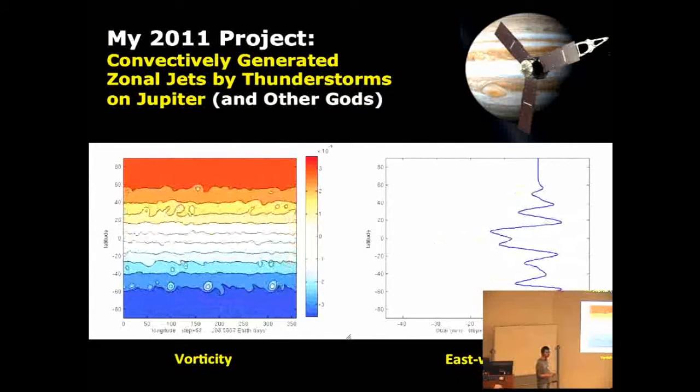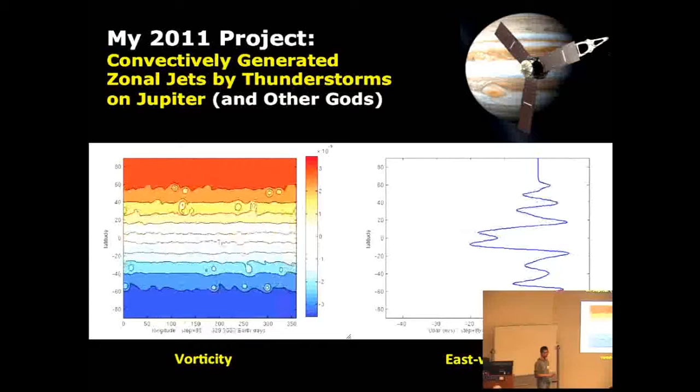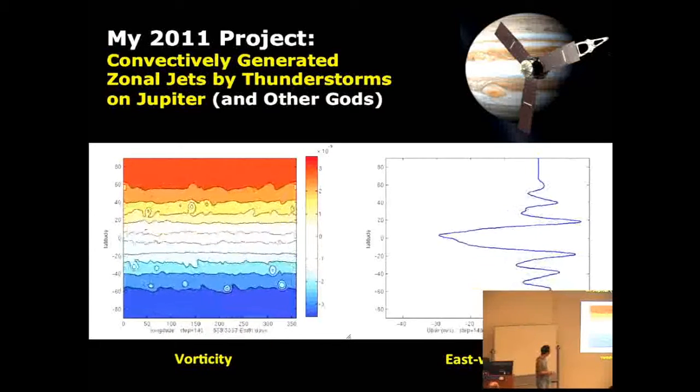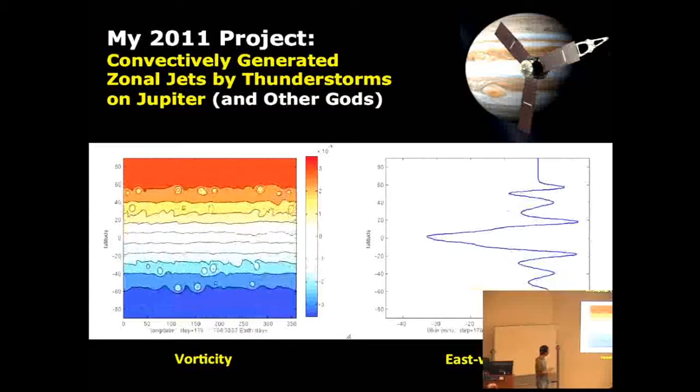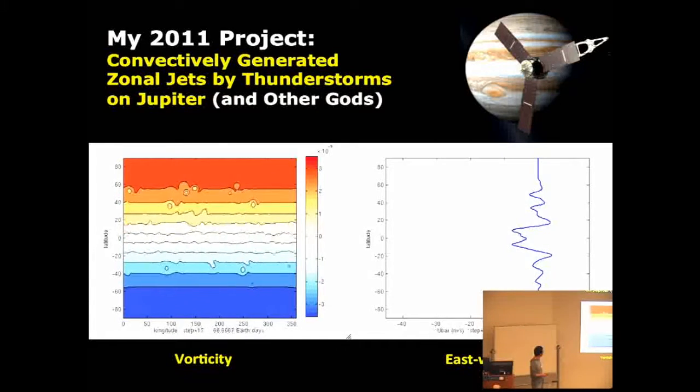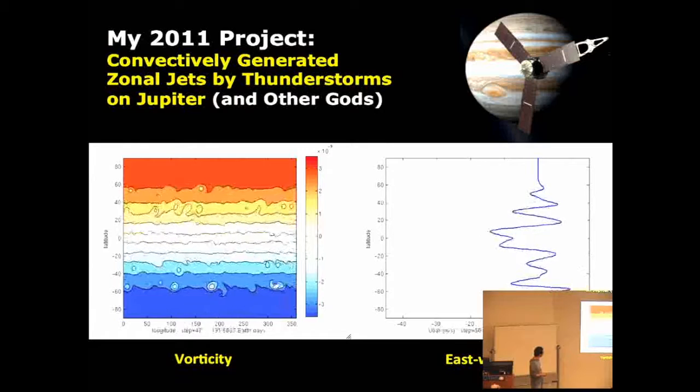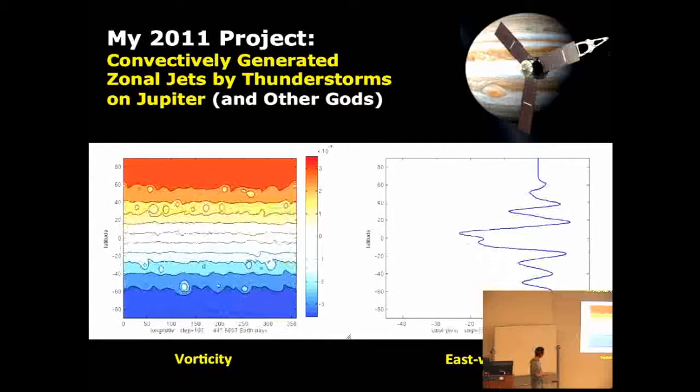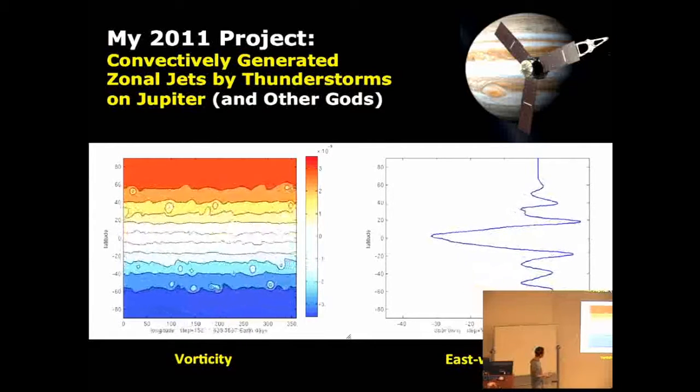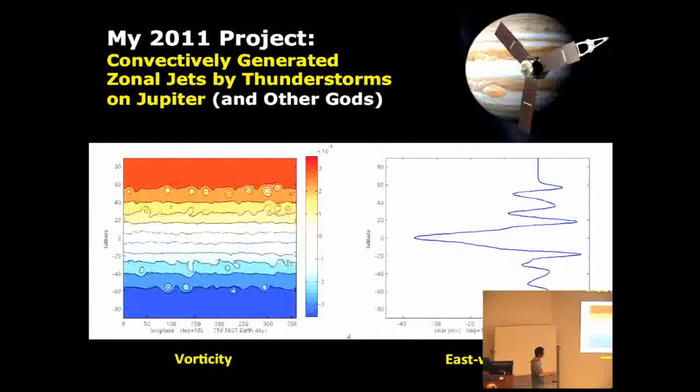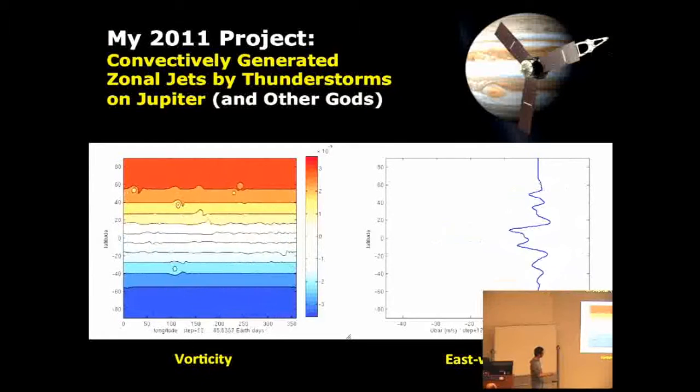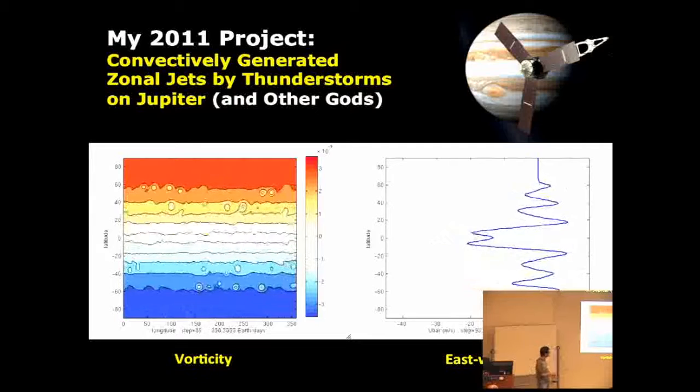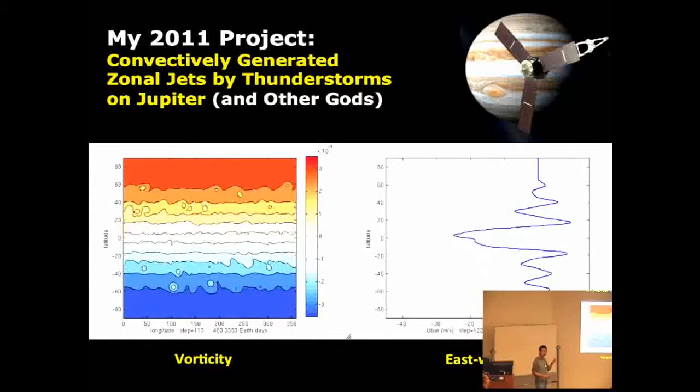You can see this is longitude, this is latitude. This is a full global simulation. This is vorticity, which is basically the curvature of the wind field. You can see a lot of vortices and banded structures. Here is zonal wind. You can see we have a lot of banded structures. Turns out the equatorial super-rotation is totally the opposite direction, so we cannot simulate that. There is some reason for that.